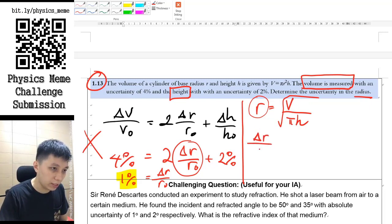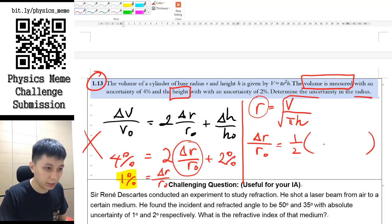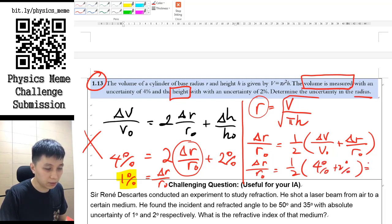So in this case, we can finally declare that the percentage error of r would equal half of, because there is a square root, once again, of the delta v one and also the delta r one. Okay, and so in this case we would have simply this as the answer: half of 4% and 2%, and that means this should be 6 divided by 2, that means 3%.